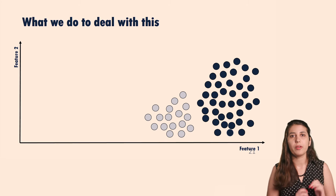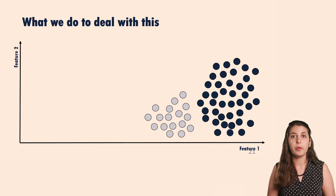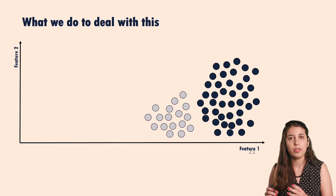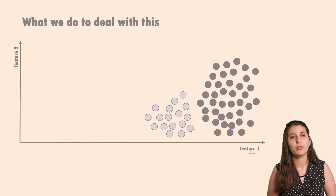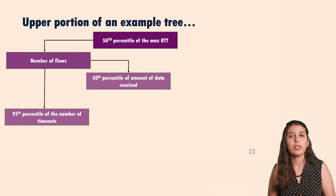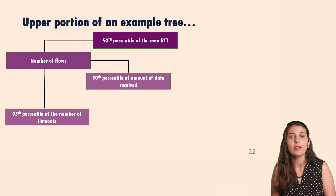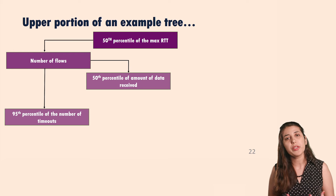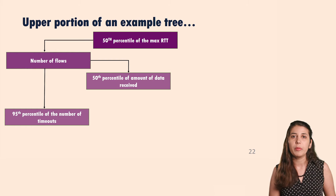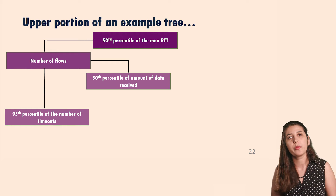In the next step, we remove all network failures and keep server-side failures as the next failure type to identify, labeling everything else as 'normal.' An example tree for distinguishing server-side failures shows that RTT estimate metrics are the topmost feature. For example, if the server is busy and can't respond, we see a delayed acknowledgment coming back, which results in an increase in our smooth RTT estimates.